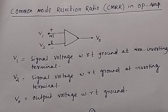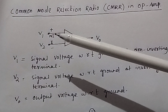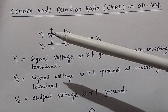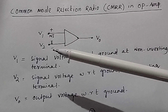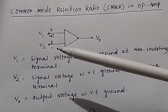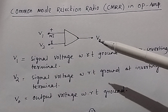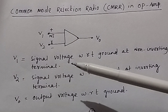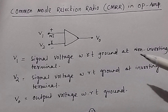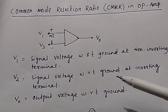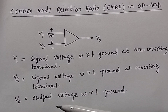In the previous video, I told you that in an operational amplifier you have two inputs. V1 is the non-inverting input — this is the positive — and the negative input is the inverting input. You have two inputs V1 and V2 and one output VO. V1 is the signal voltage with respect to ground at the non-inverting terminal, V2 is the signal voltage at the inverting terminal, and VO is the output voltage with respect to ground.